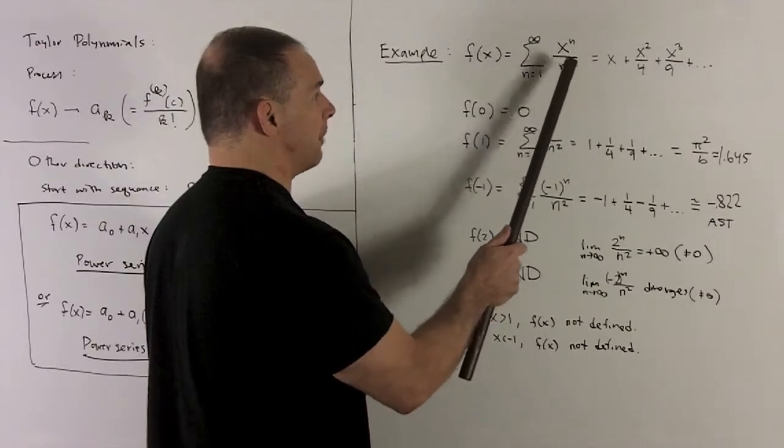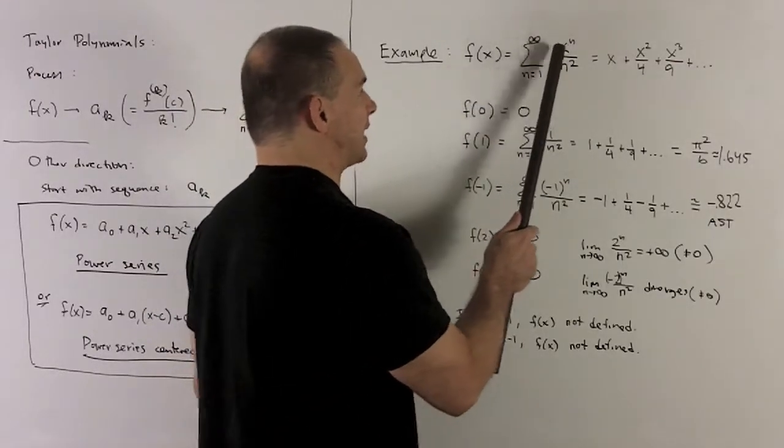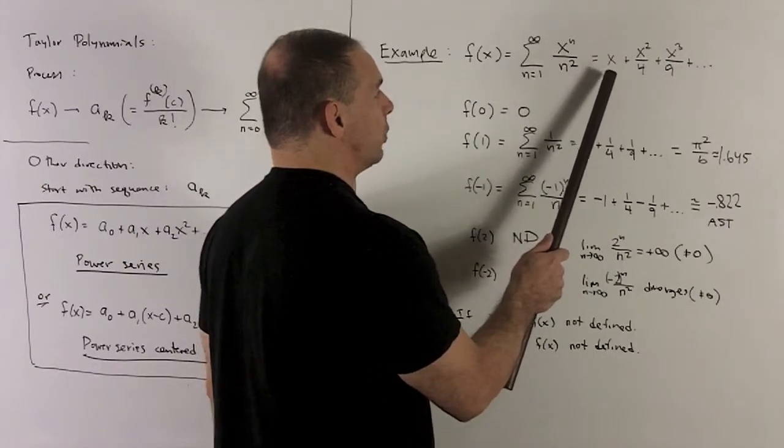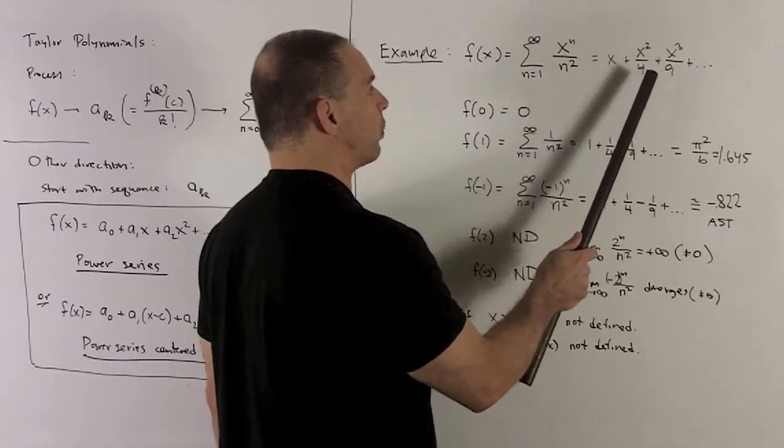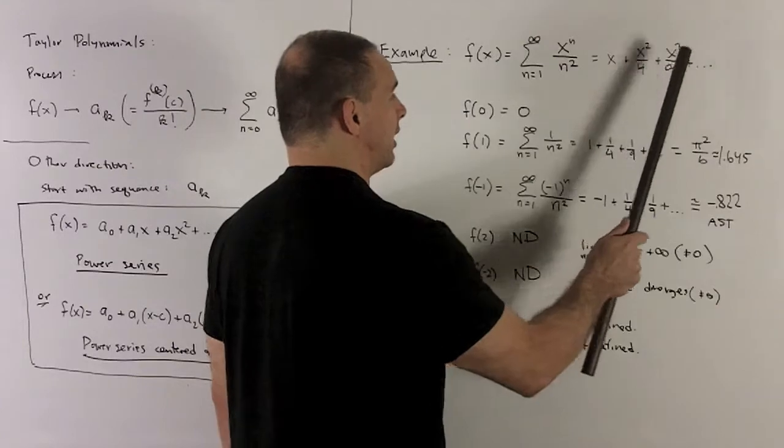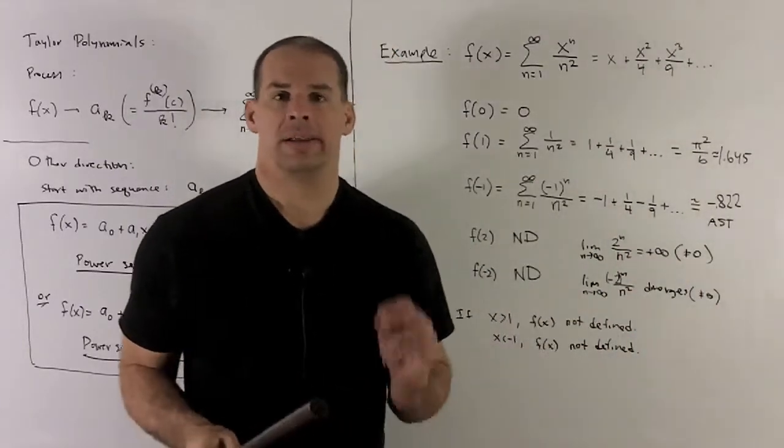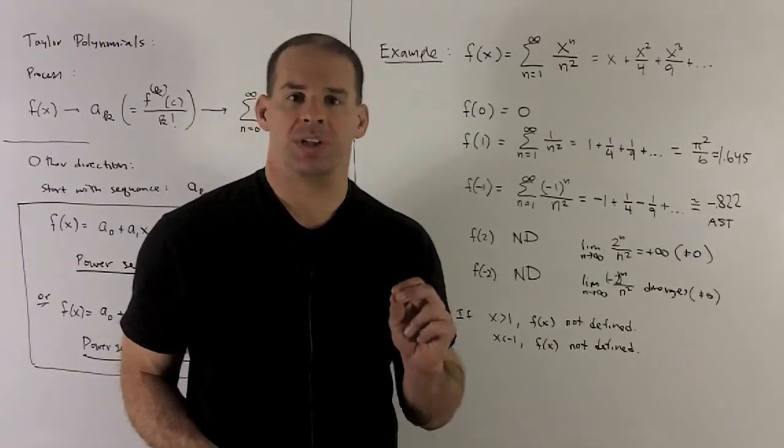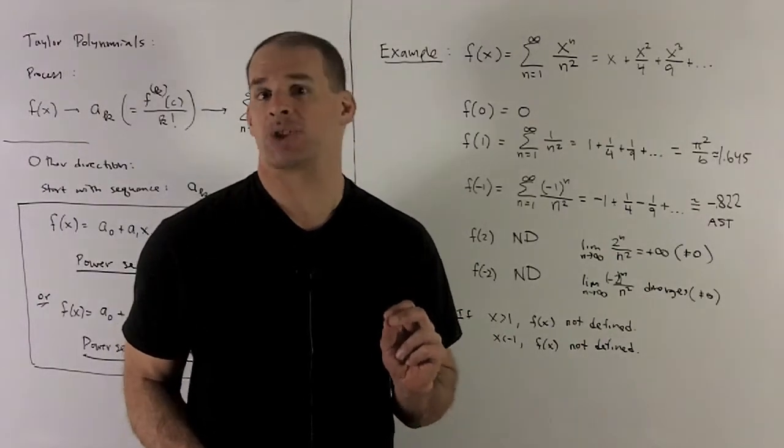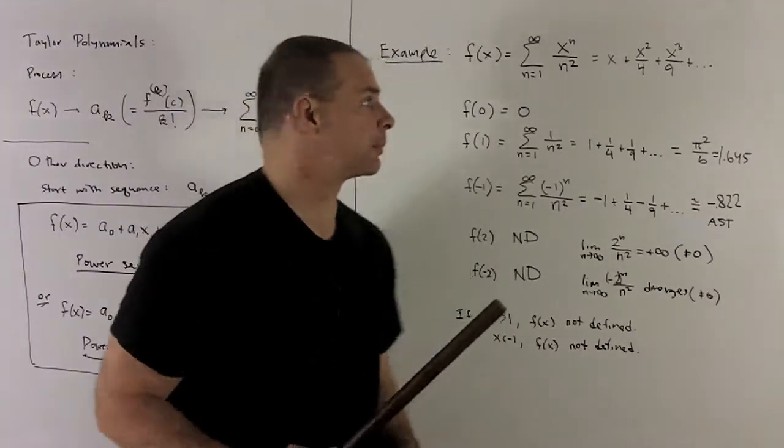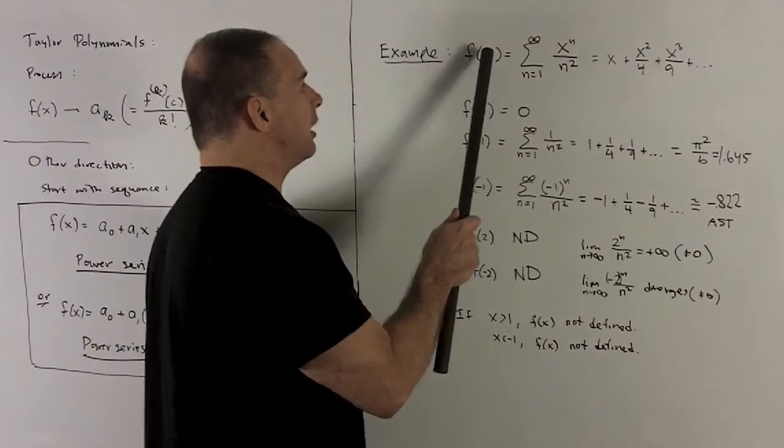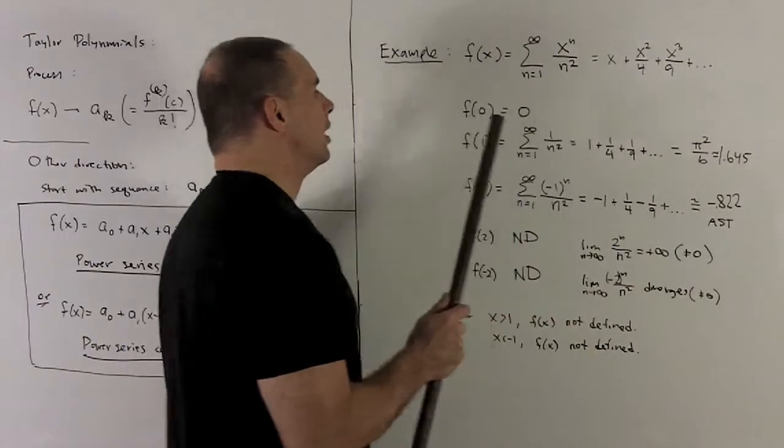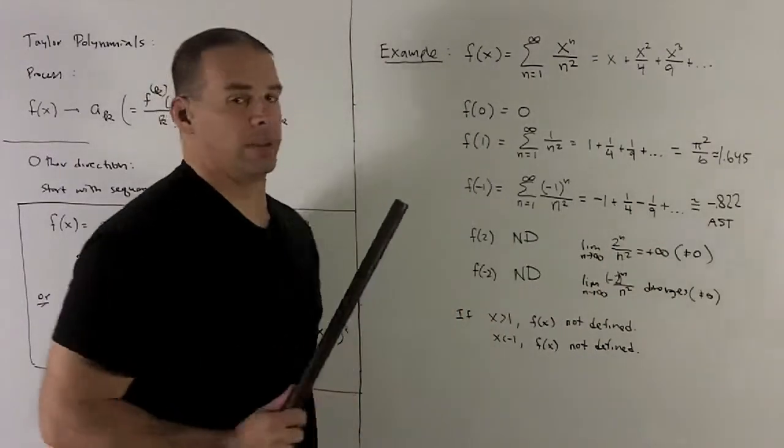So, the power series I'm going to form is going to look like this. And I'll start at one because we don't want to divide by zero. So I take x to the n over n squared, so if I write out the first few terms of this, we're looking at x plus x squared over four, plus x cubed over nine, and so on. Now, to bring this down to earth, let's evaluate it at a few points. If I put a zero into here, note that we're just going to get zero plus zero plus zero, and so on. So f of zero is going to be equal to zero in this case.